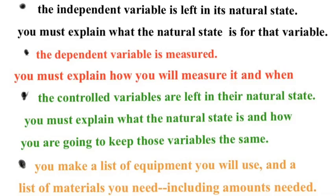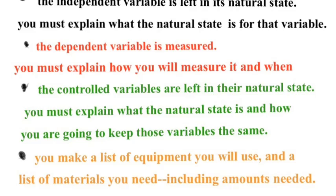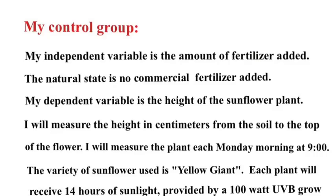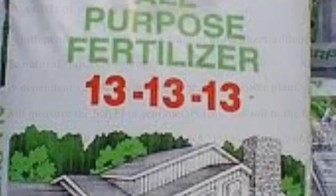I'm going to show you how I measure it in a second. I'm going to control all those other variables that have little blue tick marks on them, and I'm going to make a list of materials and safety concerns. That's the control group — not controlled variables, but control group.